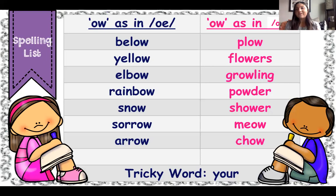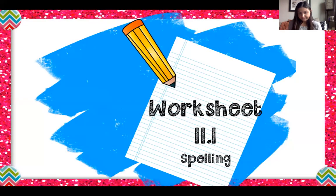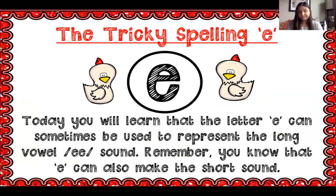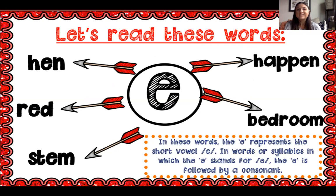As always, we have our tricky word for the spelling list and this one is 'your.' We're also going to go over our spelling tree that has the long E sound. The sound stays the same — it's always E — but it can be spelled different ways: EE, EA, and tricky E. We're going to learn today that the letter E can sometimes be used to represent the long E sound. We know E has its short sound like egg, elephant, excellent, but E can also say its own name: E.